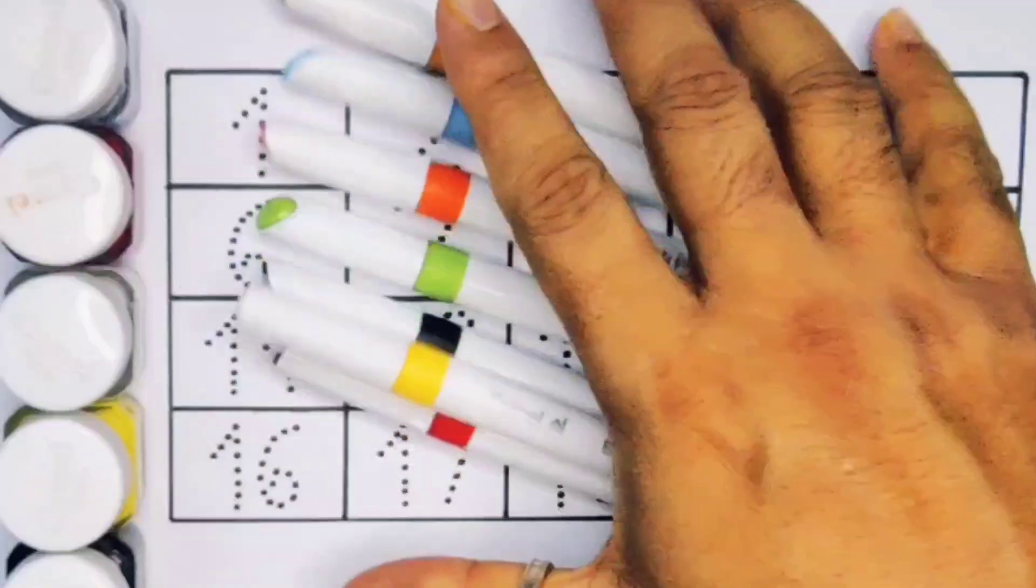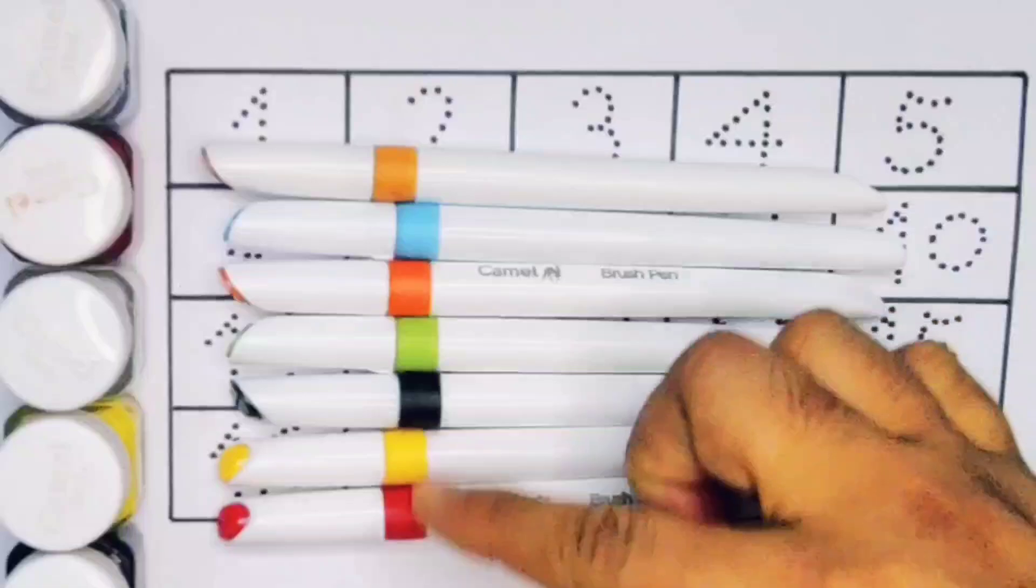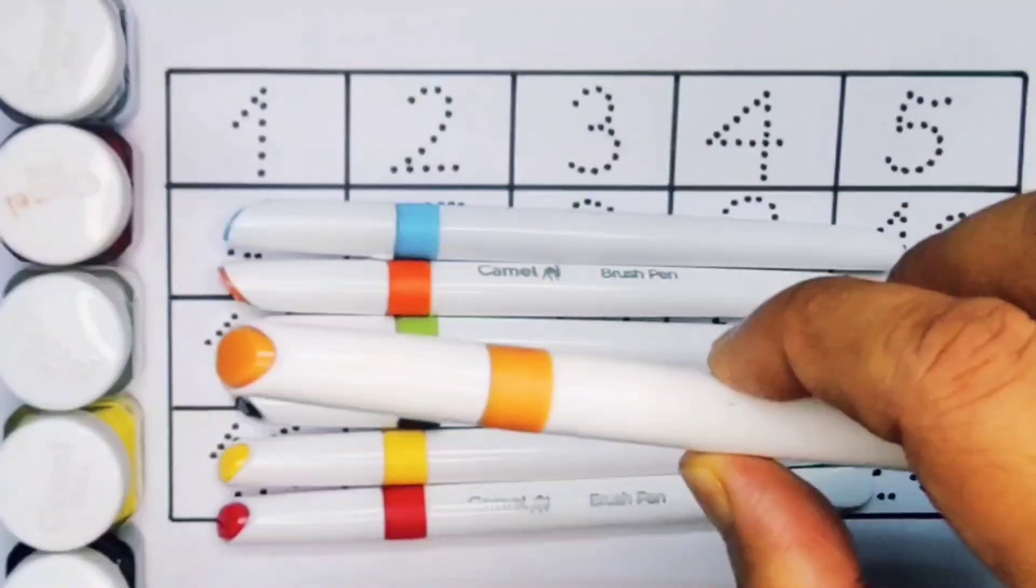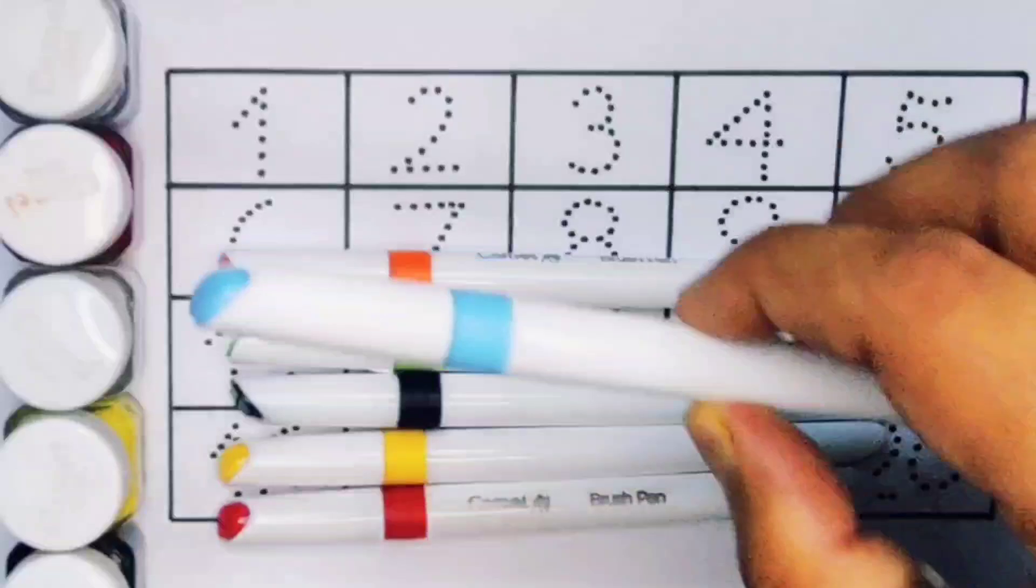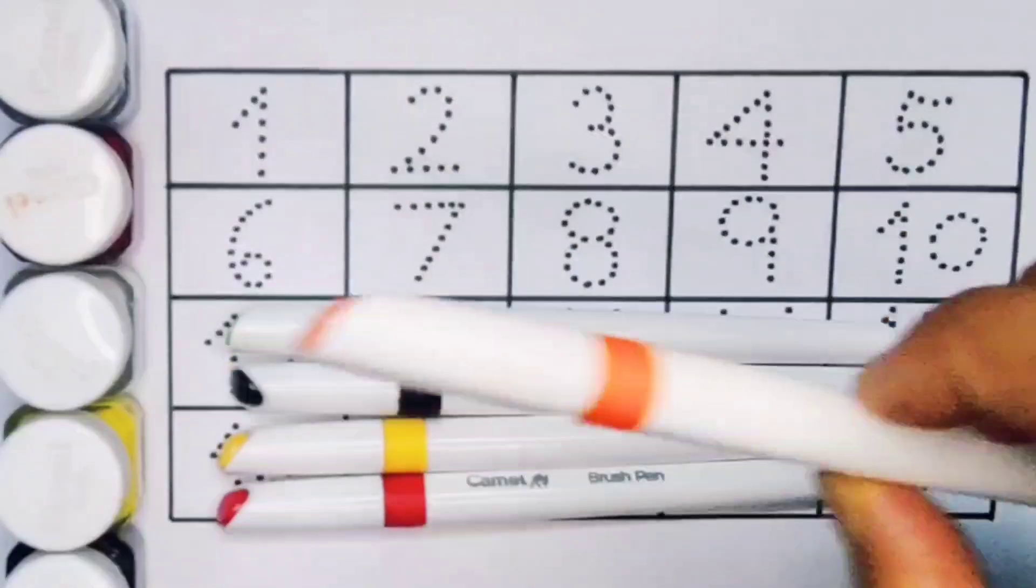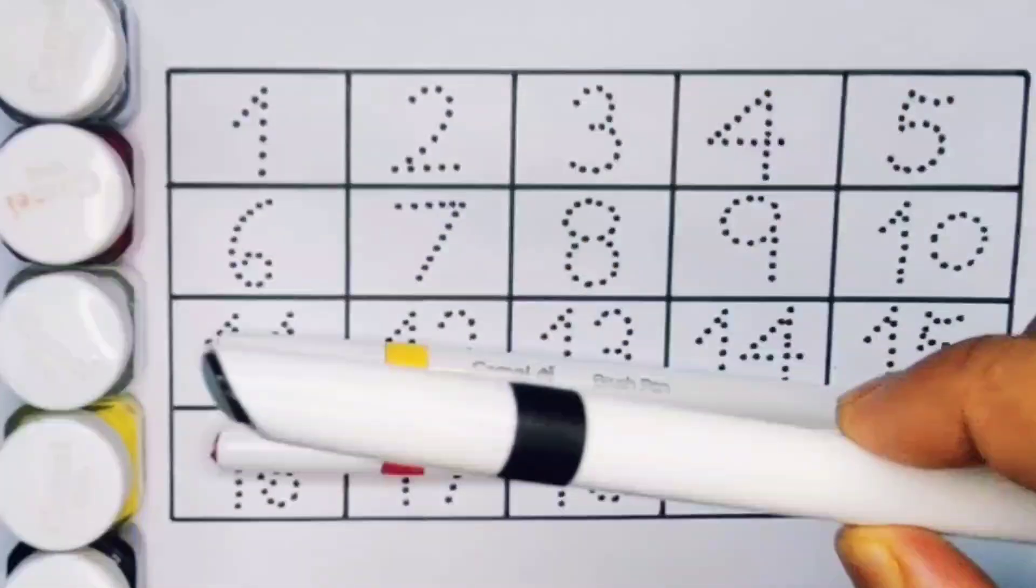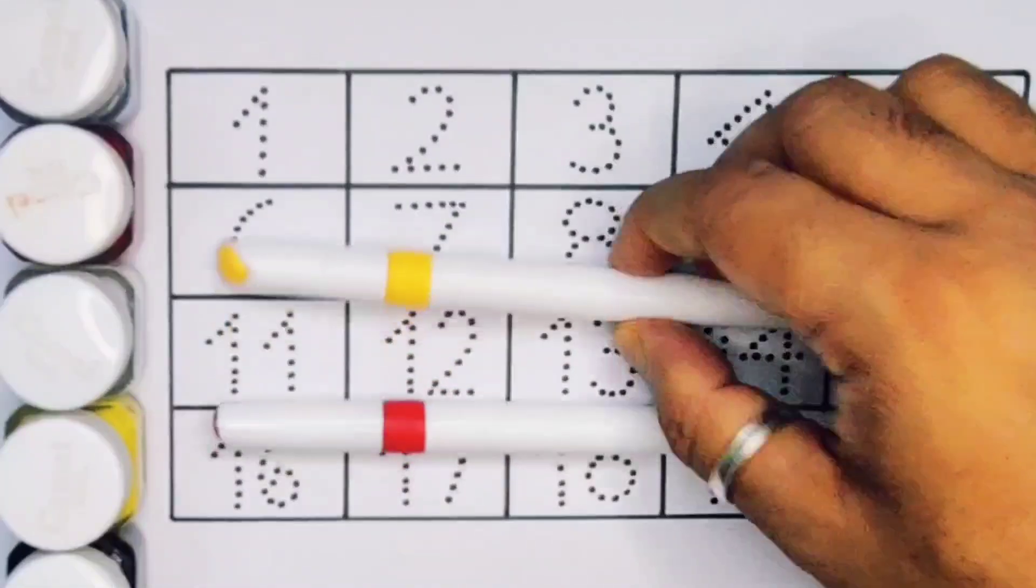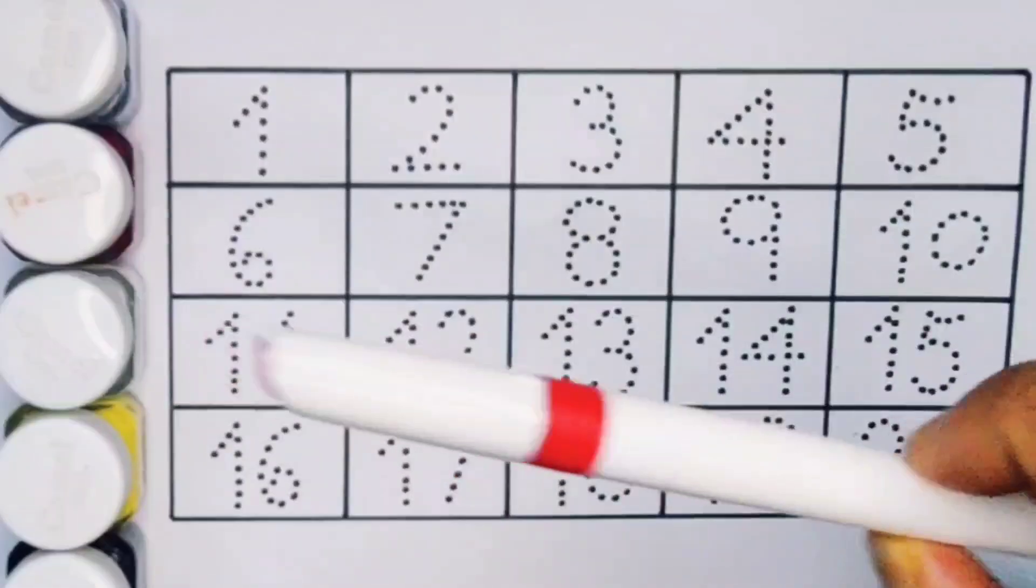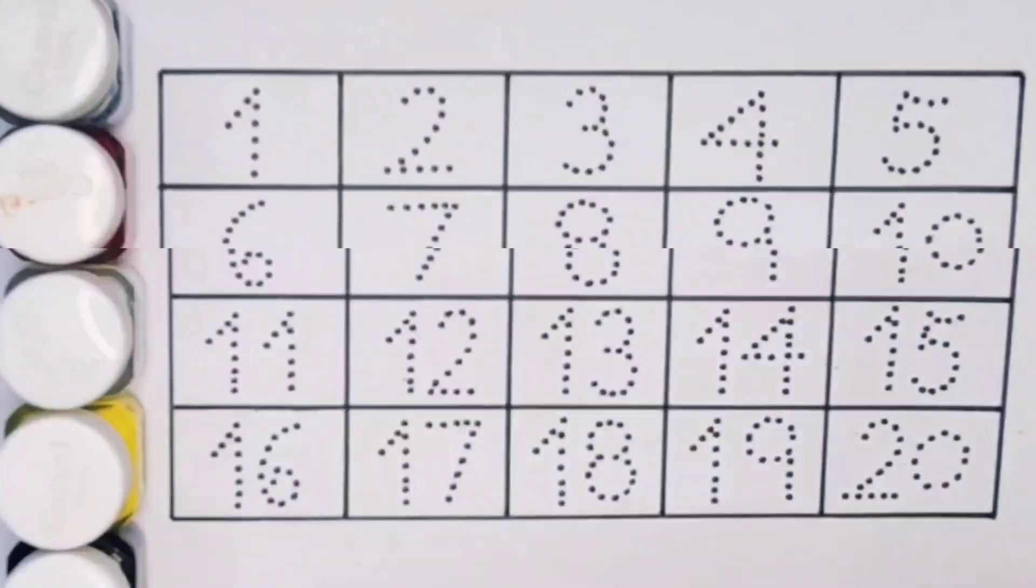Hello kids, welcome to my new video. First we're going to know the colors: brown color, sky blue color, orange color, light green color, black color, yellow color, red color. Now let's learn the numbers counting one to twenty. First, one, number one.